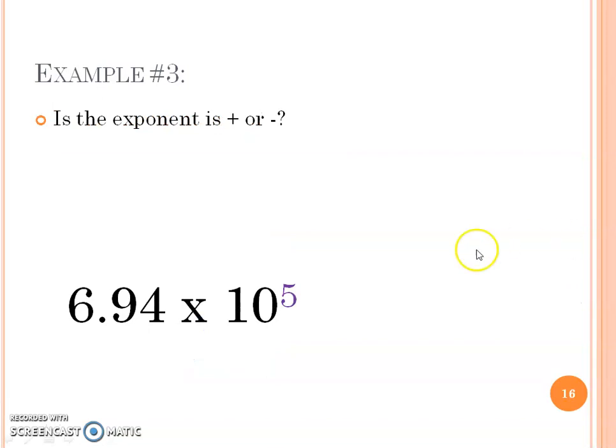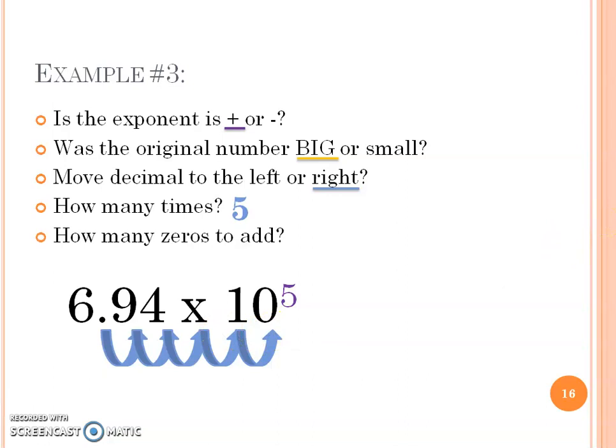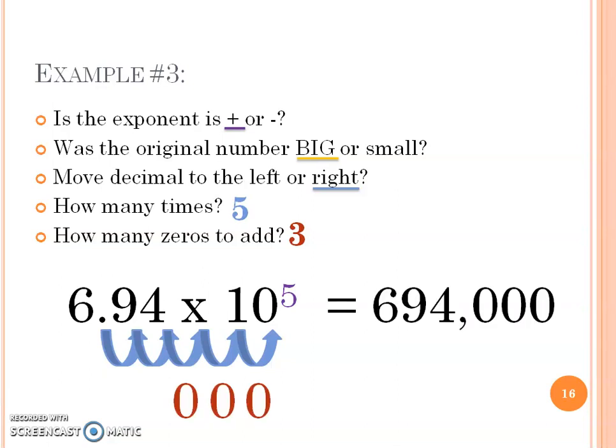So let's go the other way now. Now, is the exponent positive or negative? It is positive this time. So the original number that it came from must have been a big number. If this is a positive exponent, that means the original number was big. So are we moving that decimal to the left or to the right? Hopefully you said right. And how many times? 5. So we're going to go 1, 2, 3, 4, 5. Uh-oh. There's nothing here. Those loop-de-loops don't have anything there. So we're going to replace them with zeros. And in this case, three zeros we're going to add because those three loops don't have anything. So adding those three zeros. And this is going to equal 694,000.